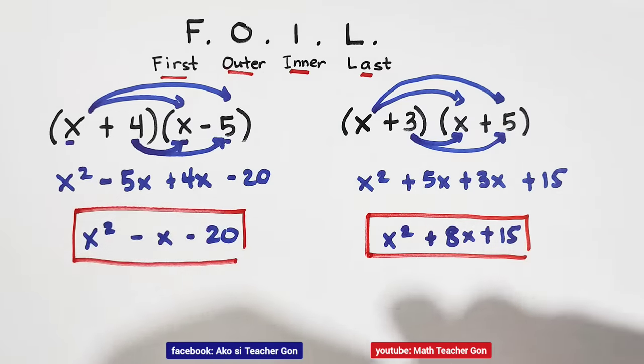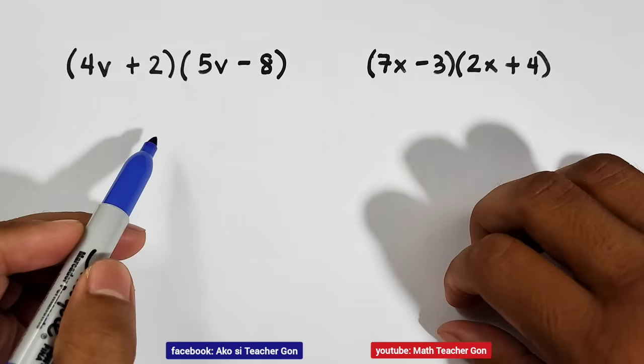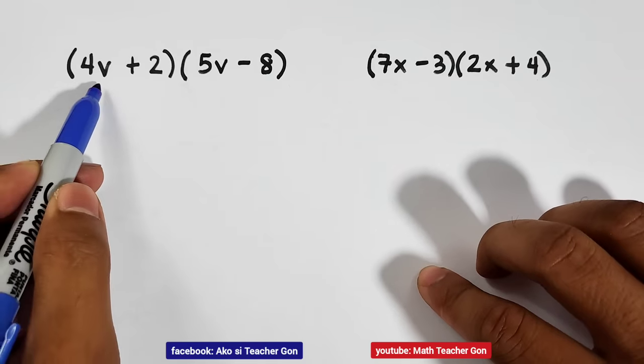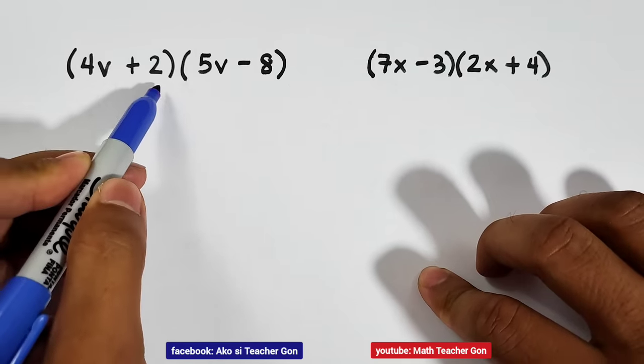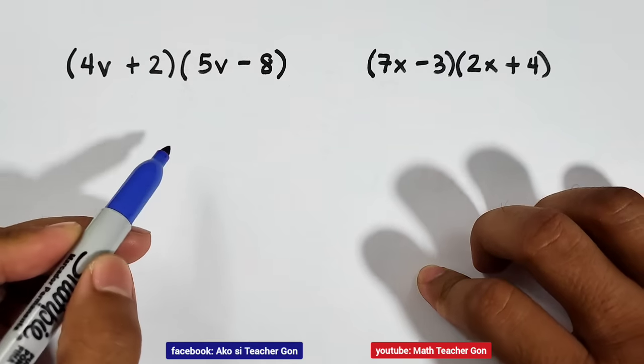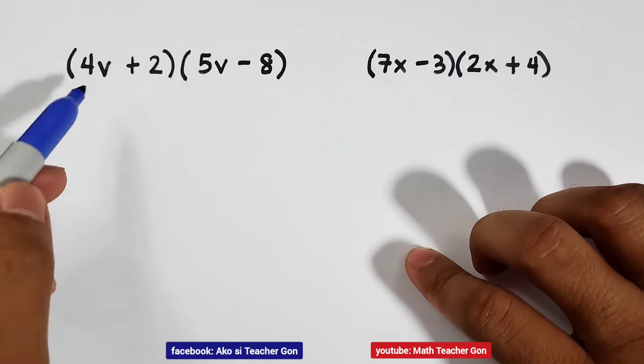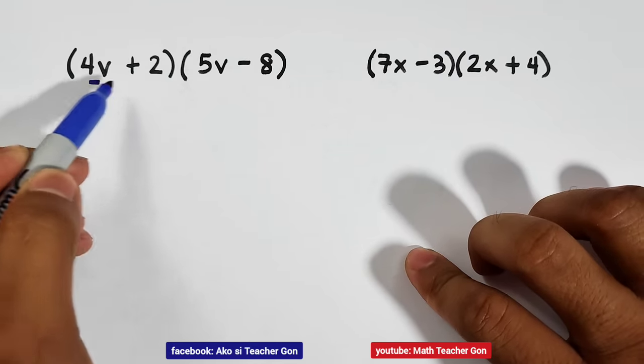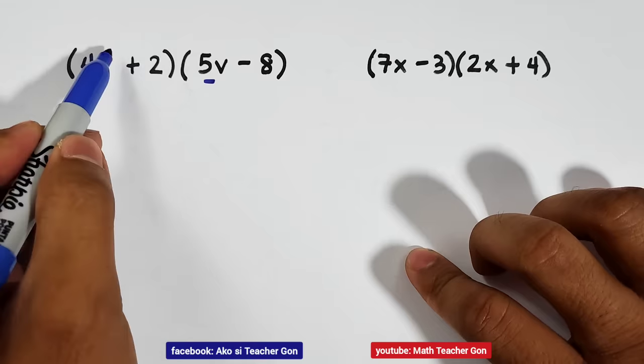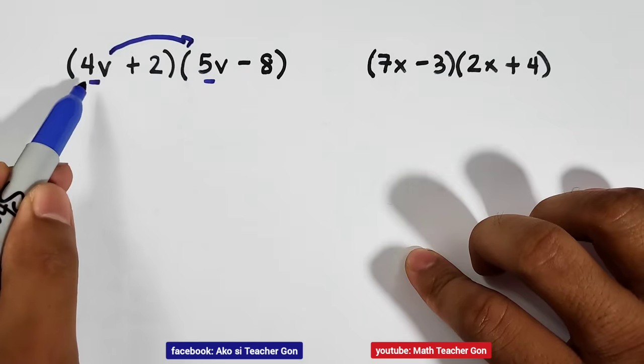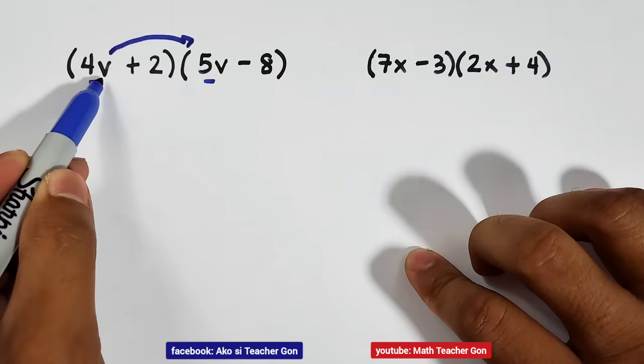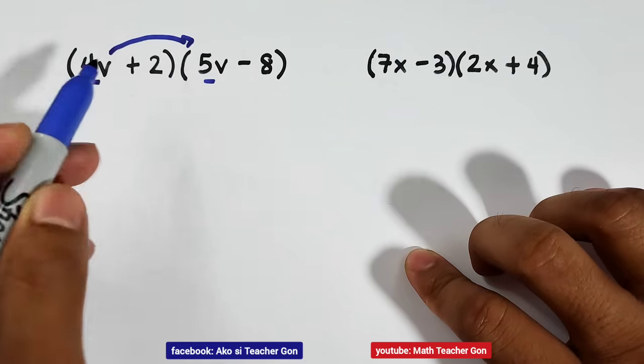In the next part of our video, I will give you two more examples for us to solve using the FOIL method. Now let's answer the third example. We have here 4v plus 2 times 5v minus 8. So remember FOIL, first terms, the first terms are 4v and 5v. Multiply them. 4 times 5 is 20. v times v is v squared.